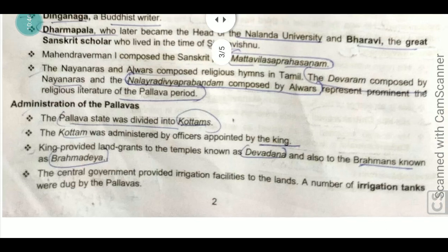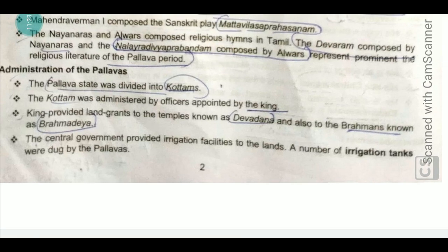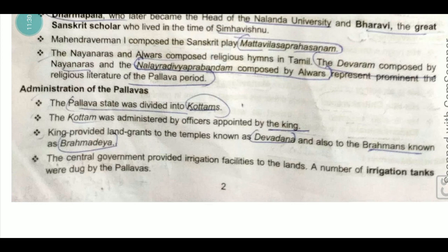In the administration of the Pallavas, the state was divided into Kottams. The Kottams were administered by officers appointed by the king. The king provided land grants to temples — known as devadana — and to Brahmins — known as brahmadeya.